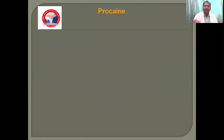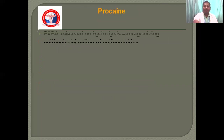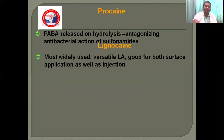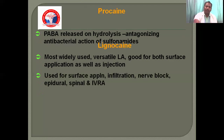Procaine: para-aminobenzoic acid (PABA) is released on hydrolysis of procaine. It antagonizes the antibacterial action of sulfonamides. Most commonly used as a drug in this category. Good for both surface application as well as injectable form. Used for surface applications, infiltrations, nerve blocks, epidurals, spinale, and IV regional anaesthesia.